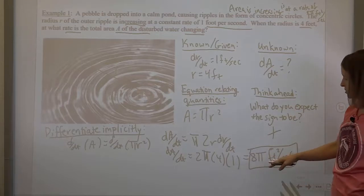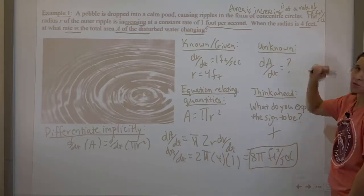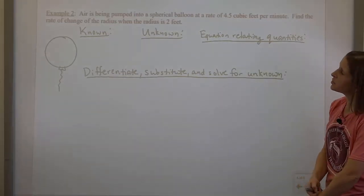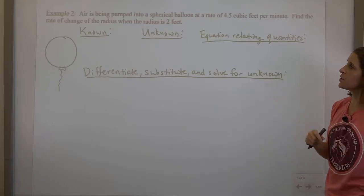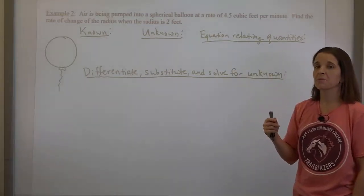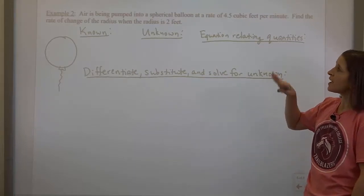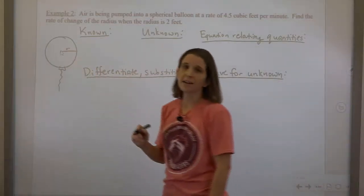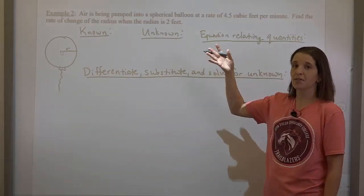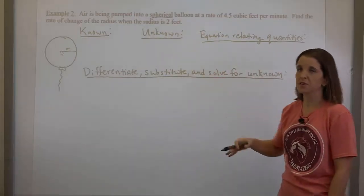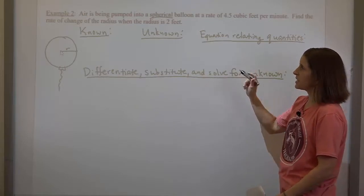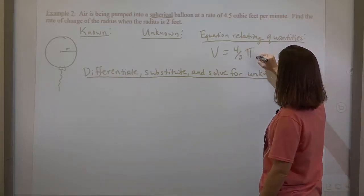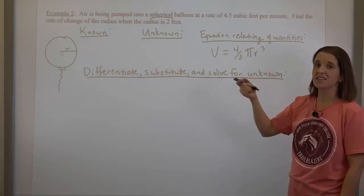We would say the area is increasing at a rate of 8 pi feet squared per second. You can compute the decimal approximation, but think about your units. You should expect to write a sentence summarizing the result, especially on the test. The next example is like the swimming pool problem: air is being pumped into a spherical balloon. I will provide the volume formula: V equals four-thirds pi r cubed.